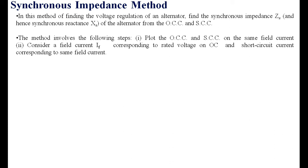After drawing the open circuit and the short circuit characteristics, for a particular field current, you have to note what is the open circuit voltage and the short circuit current. If you want to find out the rated voltage, you have to mark the point on the OCC corresponding to the rated value of the alternator, then find out the corresponding field current. For the same field current, note the short circuit current. Then find out the synchronous impedance by dividing the open circuit voltage by the short circuit current for the same field current.